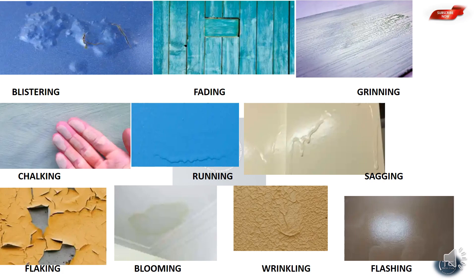Fading — caused by the effect of sunlight, resulting in color change. Blooming — formation of a dull patch on the background surface. Chalking — the paint surface turns to powder.